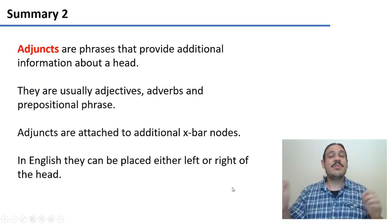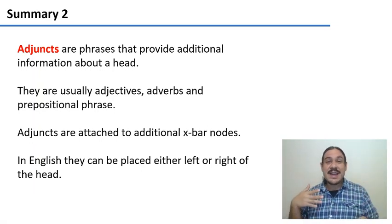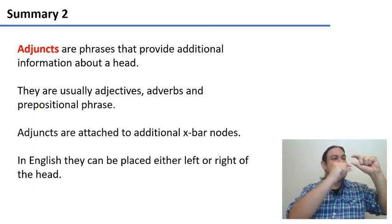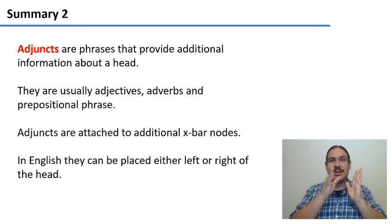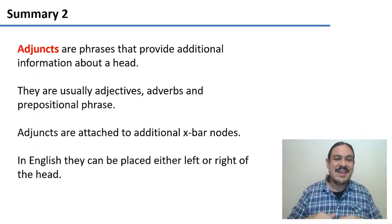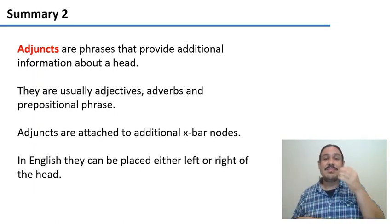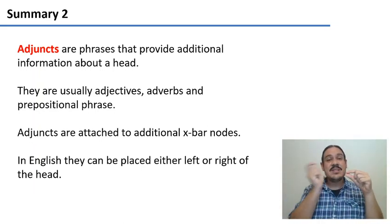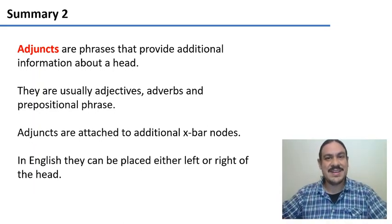So adjuncts are phrases that provide additional information about the head. They're usually things like adjectives, adverbs, or prepositional phrases. You attach them to additional X-bar nodes, and you can have as many X-bar nodes as you need — for a big, amazing, incredible, delicious pizza. You might have noticed that in English, adjuncts can go to the left or to the right — they don't have a fixed position, whereas complements usually go to the right of the head.